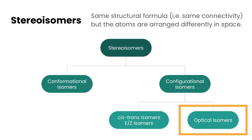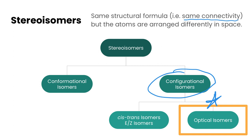In this video we're going to take a look at a special type of stereoisomer called an optical isomer. Optical isomers are a type of configurational isomer. Stereoisomers always have the same connectivity but the atoms are arranged differently in space. So let's hop right into this and see what these optical isomers are all about.